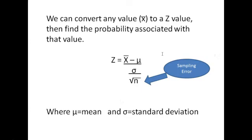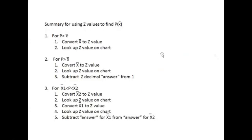Once we correct for that sampling error, the process is actually the same as the last chapter. So if we want to find the probability for less than a given sample mean, we convert that sample mean or x̄ to a z value using our new formula. Then we look the z value up on a chart.